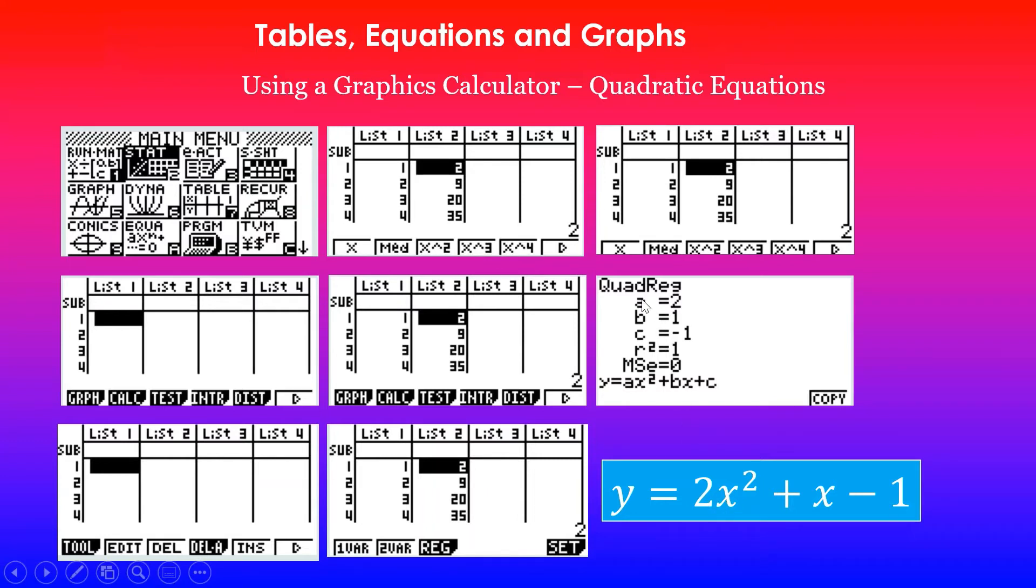Why 2X²? Because the A value is 2. The B value is 1, so 1X is the same as X. And the constant value is -1. That's the equation. Now I'm going to grab a graphics calculator and show you how to do this.